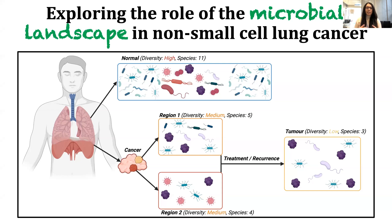A large scale study conducted by NIH sampled multiple body sites to characterize what a normal microbiome would look like. They found differences between individuals, as well as large scale differences between the body sites of individuals. One common analogy used is that the microbiome between body sites can differ as much as taking a swab from the sub-Saharan desert to that of the Amazon rainforest — and this is just under normal conditions of health.